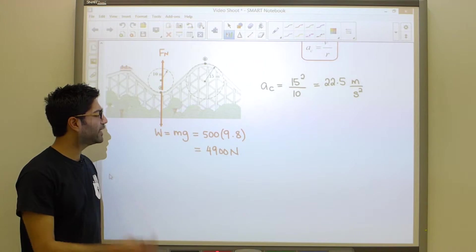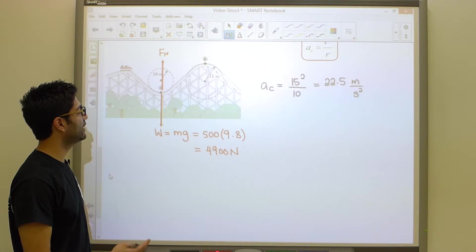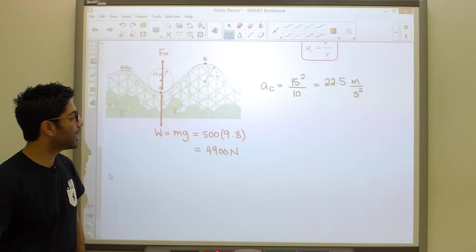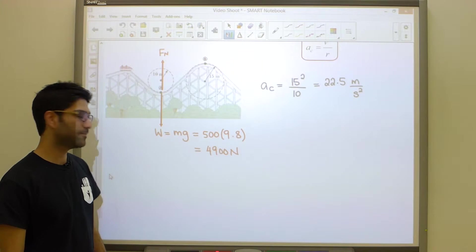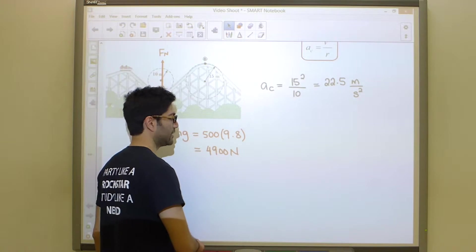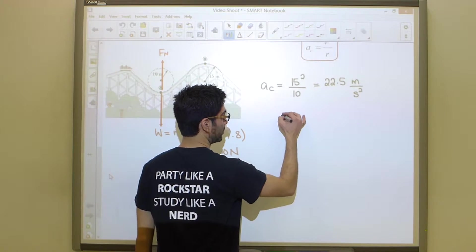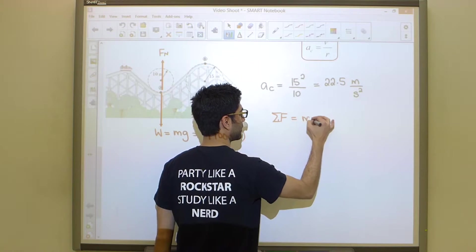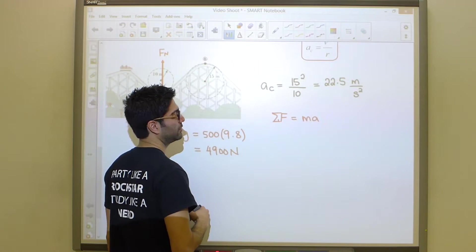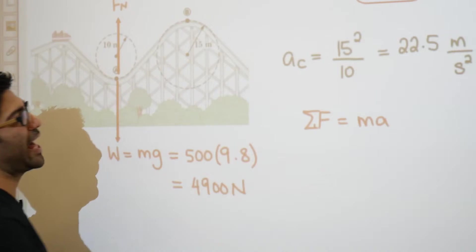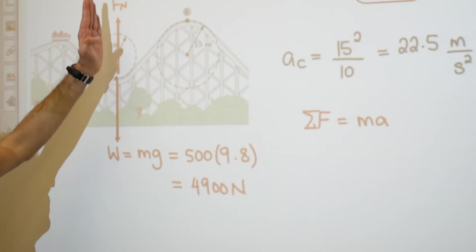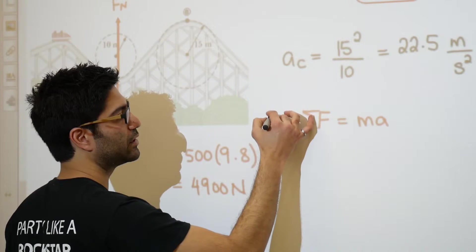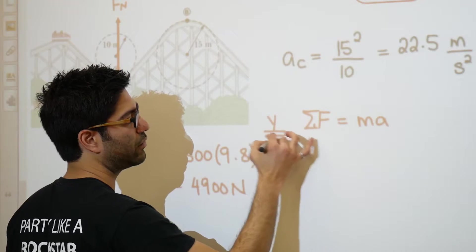Now that we've identified all the forces acting on our object, we can apply Newton's second law to answer the problem. Newton's second law says F equals ma, or the sum of the forces equals mass times acceleration. We're going to analyze this in only the Y direction because there's nothing interesting going on in the X direction.